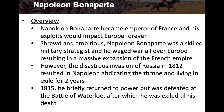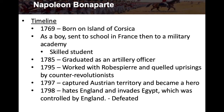Like the other PowerPoints, we have a timeline — you don't need to know these dates unless I specifically tell you, but just to give you an idea of the time period. In 1769 he was born on the island of Corsica; as a boy he was sent to school in France and then to a military academy where he showed great skill. In 1785 he graduated as an artillery officer. In 1795 he worked with Robespierre and quelled uprisings by the counter-revolutionists. In 1797 he captured Austrian territory and became a national hero.